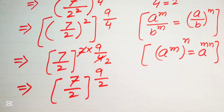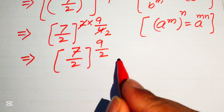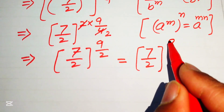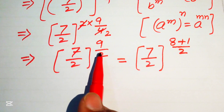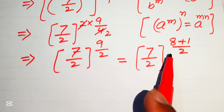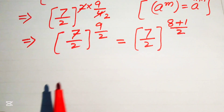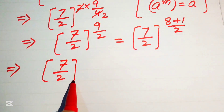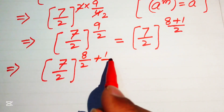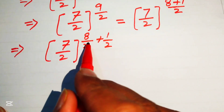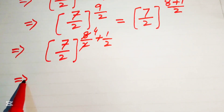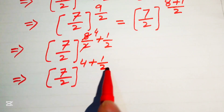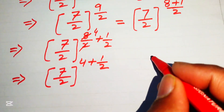Now we have (7 over 2) to the power of 9 over 2. We rewrite the exponent 9 as 8 plus 1, so 9 over 2 becomes (8 plus 1) over 2. Breaking this fraction gives us 8 over 2 plus 1 over 2, and since 8 over 2 equals 4, the exponent becomes 4 plus 1 over 2.